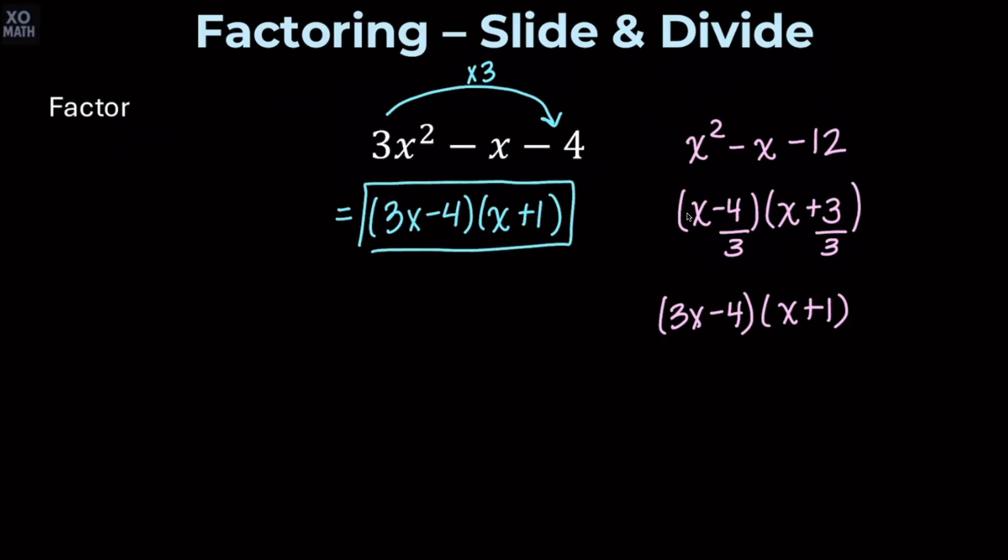And of course, we can always check when we factor by just multiplying. 3x times x is 3x squared. 3x times 1 is 3x. Negative 4 times x is negative 4x, so those add to give us negative x. And negative 4 times positive 1 is negative 4.